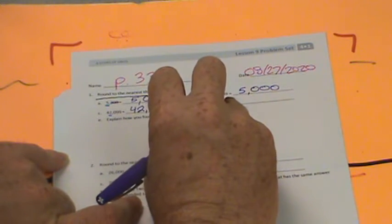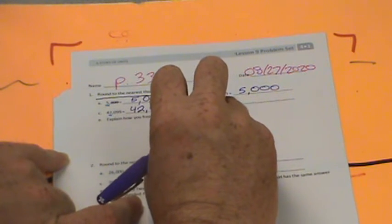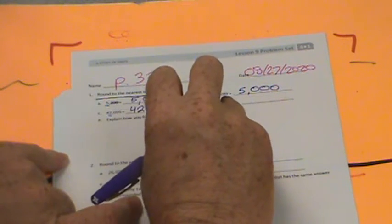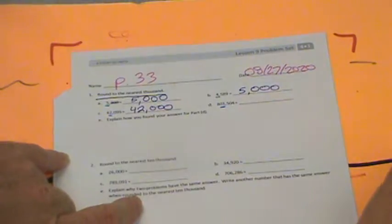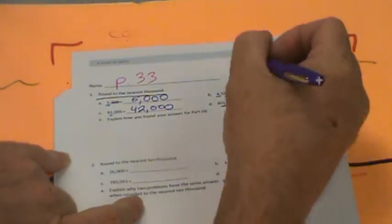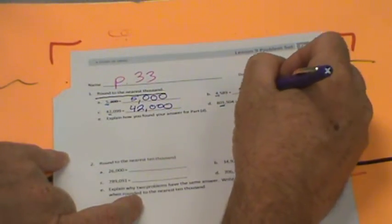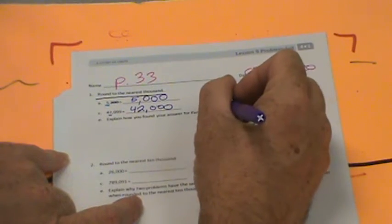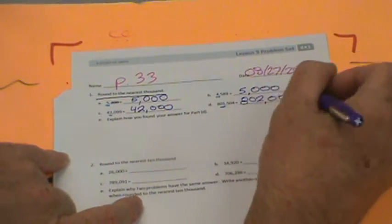And over here we have 801,504. Remember, the midway point in the thousands is 500. Is that greater than 500? It's 504. Not much greater, but it is greater, so we would round up to 802. And notice, after the thousand place, 0, 0, 0.